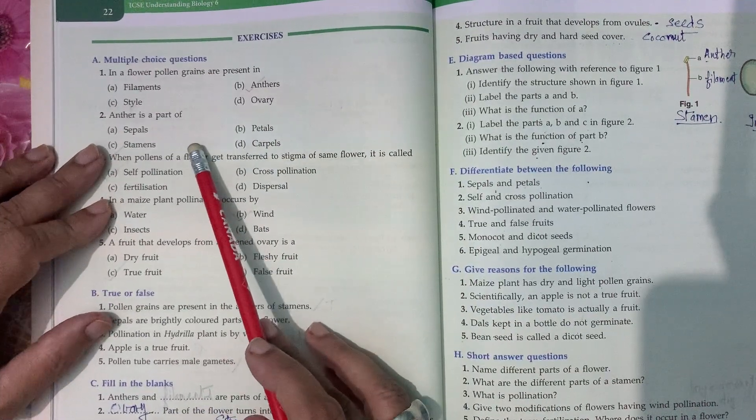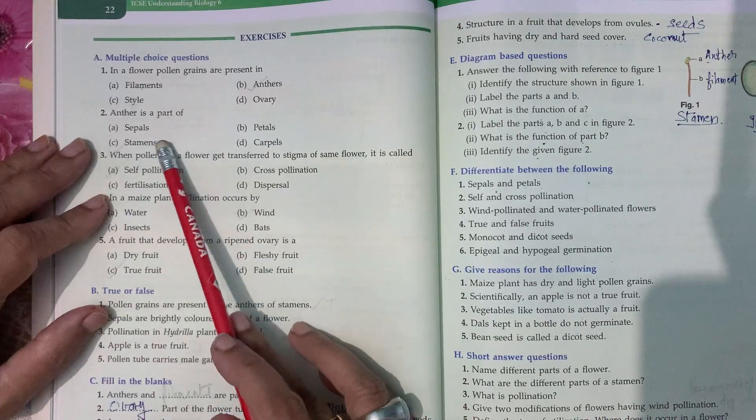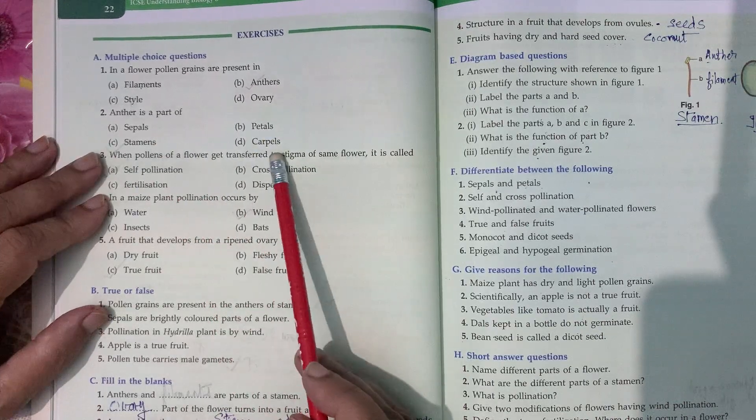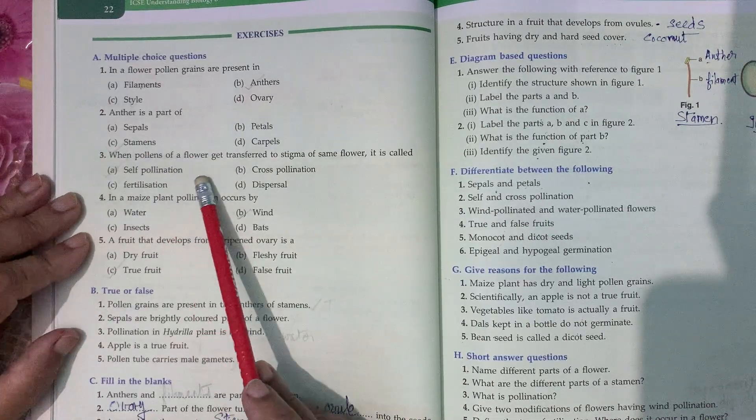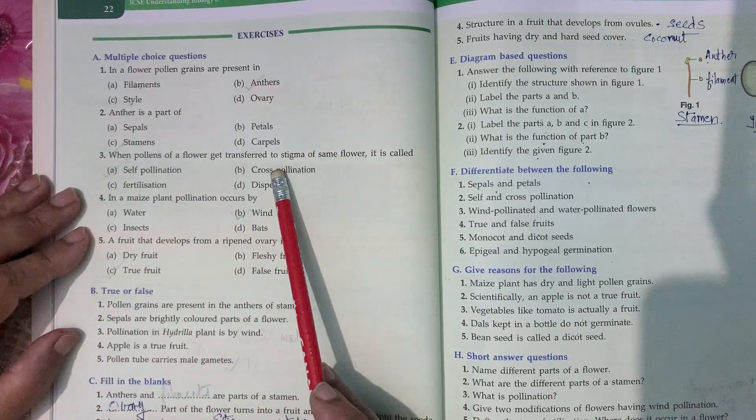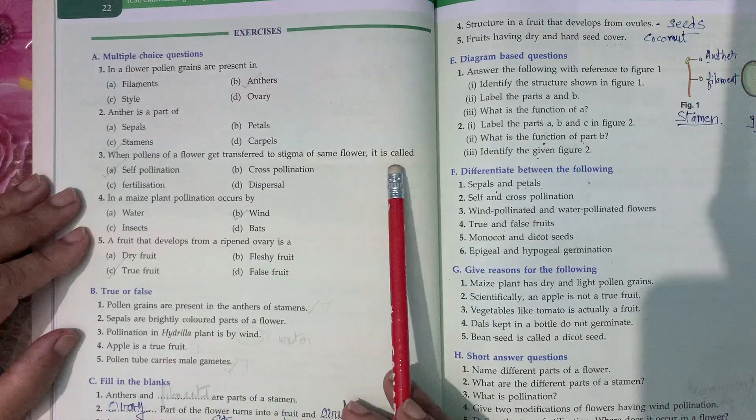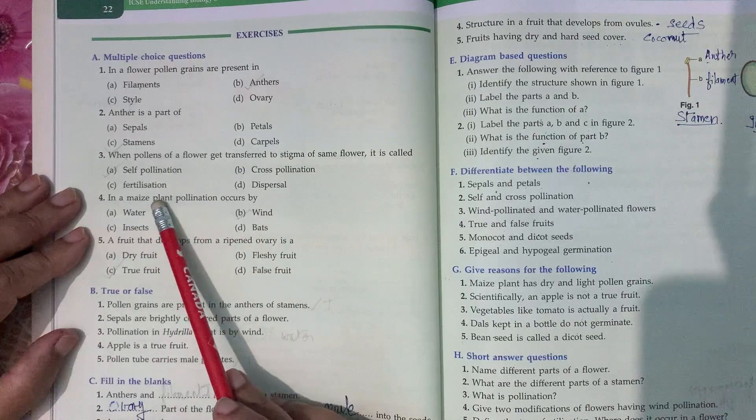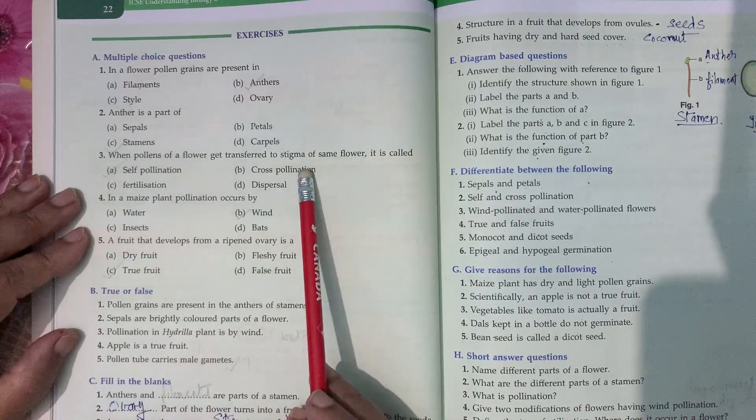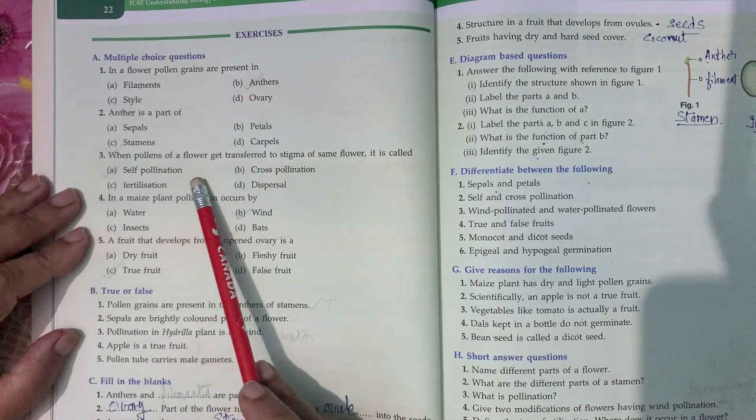Second one, anther is a part of sepals, petals, stamens, or carpel. Anther is a part of stamens. When pollen of a flower gets transferred to stigma of same flower, it is called self-pollination, cross-pollination, fertilization, or dispersal. The correct option is self-pollination.